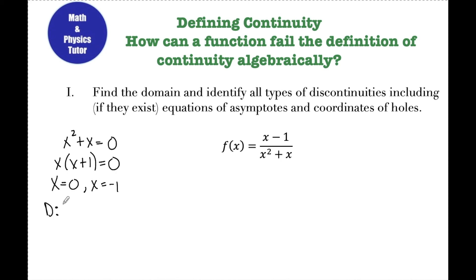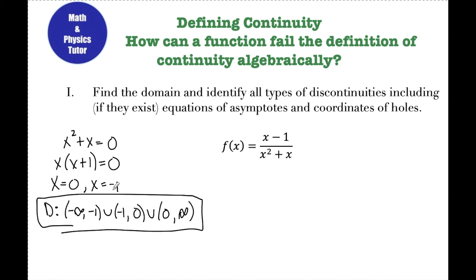So the domain is negative infinity to negative 1, not including negative 1; negative 1 to 0, not including 0; and 0 to infinity. Since x equals negative 1 and x equals 0 are not in the domain, something is going on at those two values — some type of discontinuity.